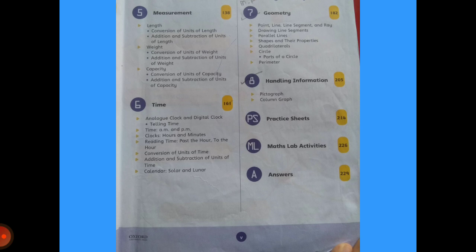We will study how to measure all these three quantities. Chapter 6 is time. We did this in Class 2 as well, where we studied hours, minutes, and seconds. In this chapter, we will study analog clocks and digital clocks.